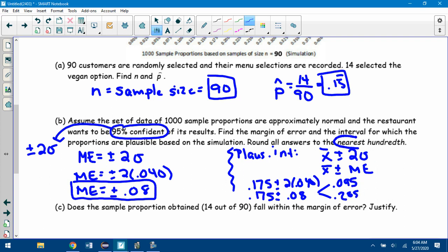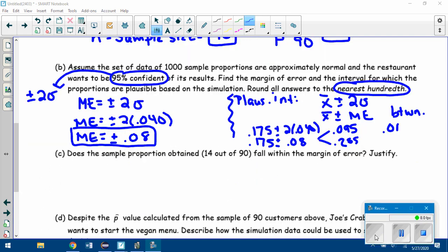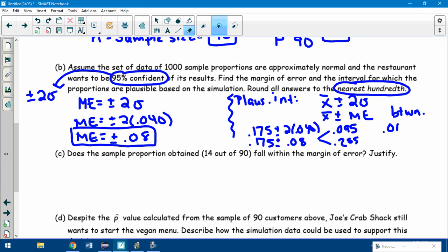When I do that, 0.175 minus 0.08, so minus the two standard deviations, is 0.095, and 0.175 plus 0.08, plus the two standard deviations, is 0.255. Watch, it did say round to the nearest hundredth. So the range of plausible values, 0.095 would round this up to 0.10, so it's between 0.10 or 10% and 0.255 would be 0.26 or 26%. There's your range of plausible values. Make sure you notice the difference when they ask for margin of error versus range of plausible values.